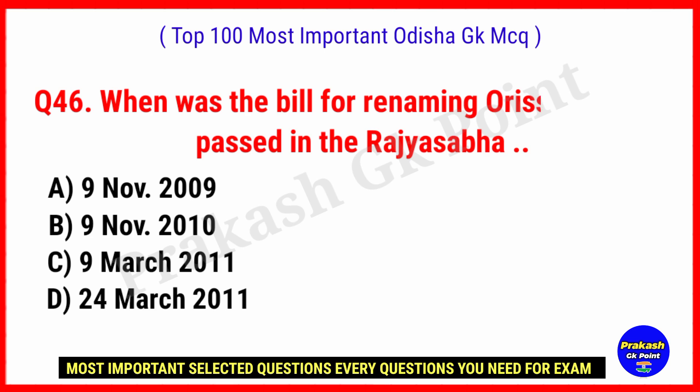When was the bill for renaming Orissa to Odisha passed in the Rajya Sabha? Answer: Option D, 24 March 2011.